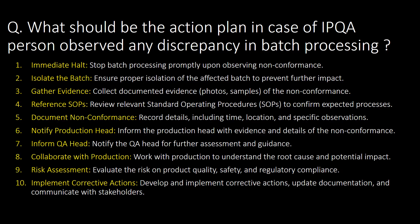What should be the action plan when an IPQA person observes a discrepancy in batch processing? Here are 10 action steps to follow: first, immediate halt; second, isolate the batch; third, gather evidence; fourth, reference SOPs; fifth, document non-conformance; sixth, notify production ahead; seventh, inform QA head; eighth, collaborate with production; ninth, risk assessment; and tenth, implement corrective actions.